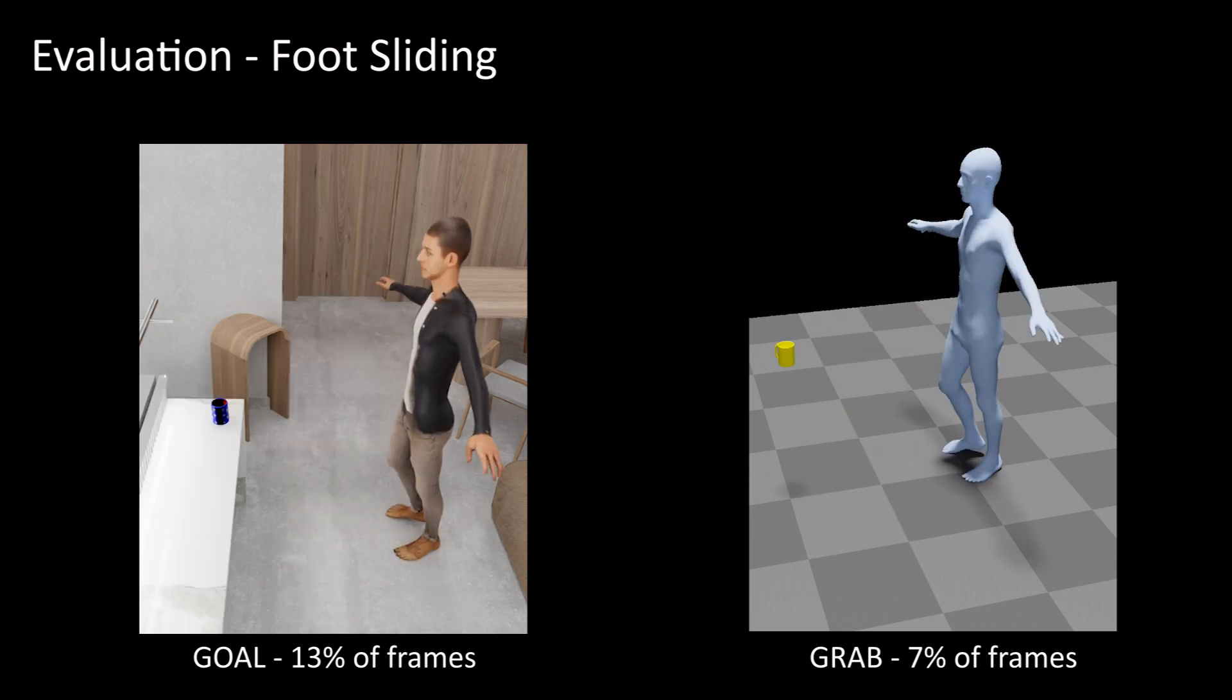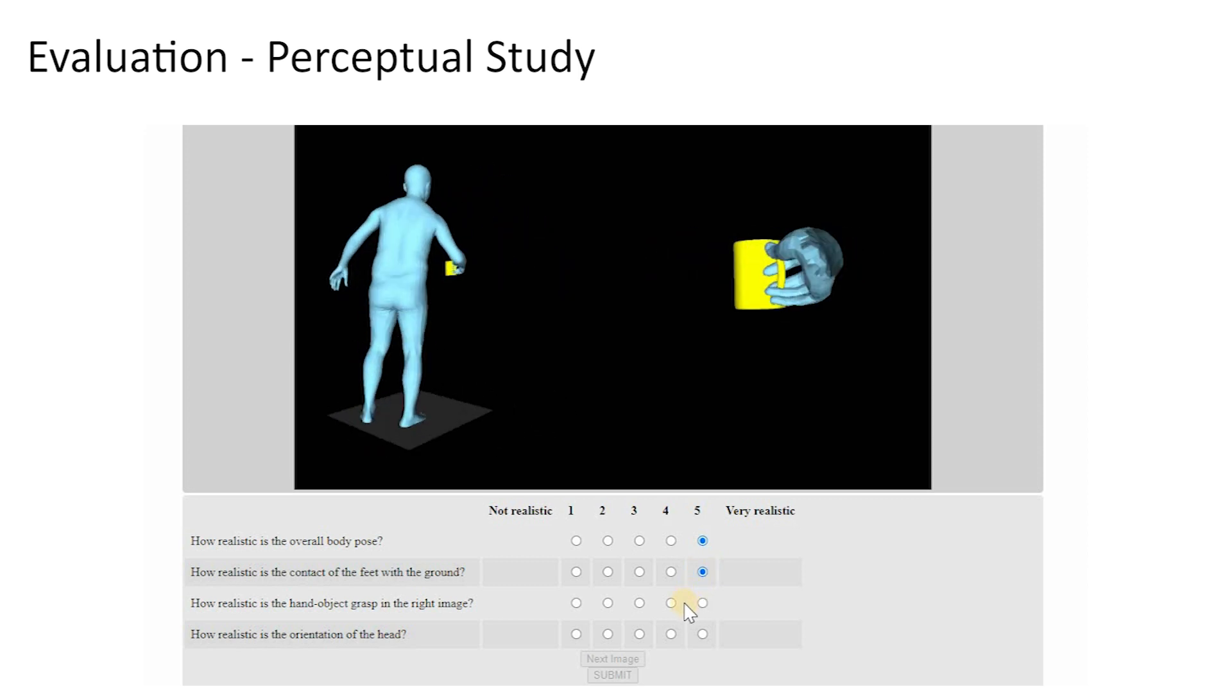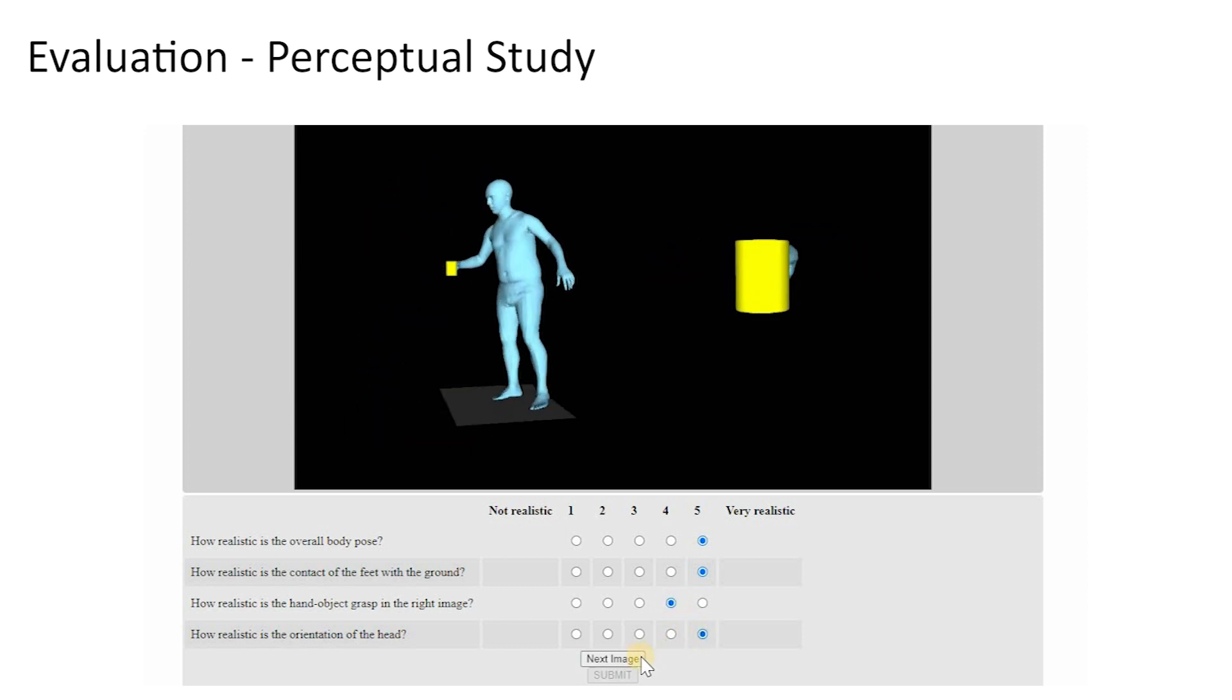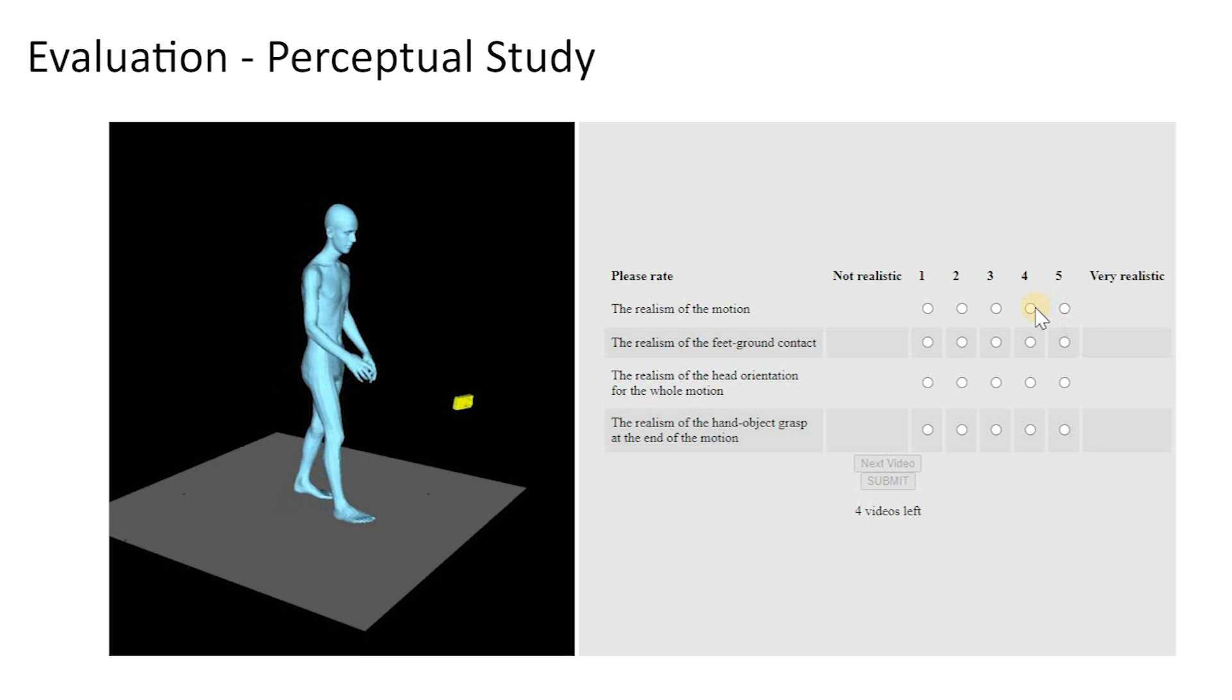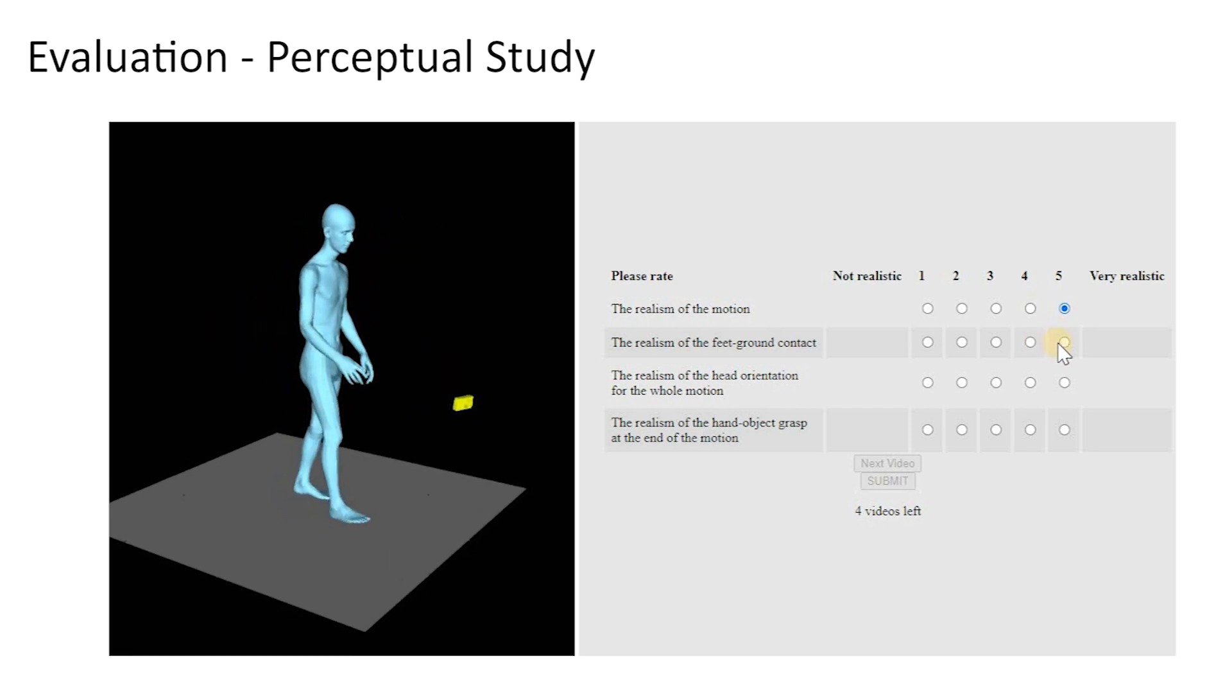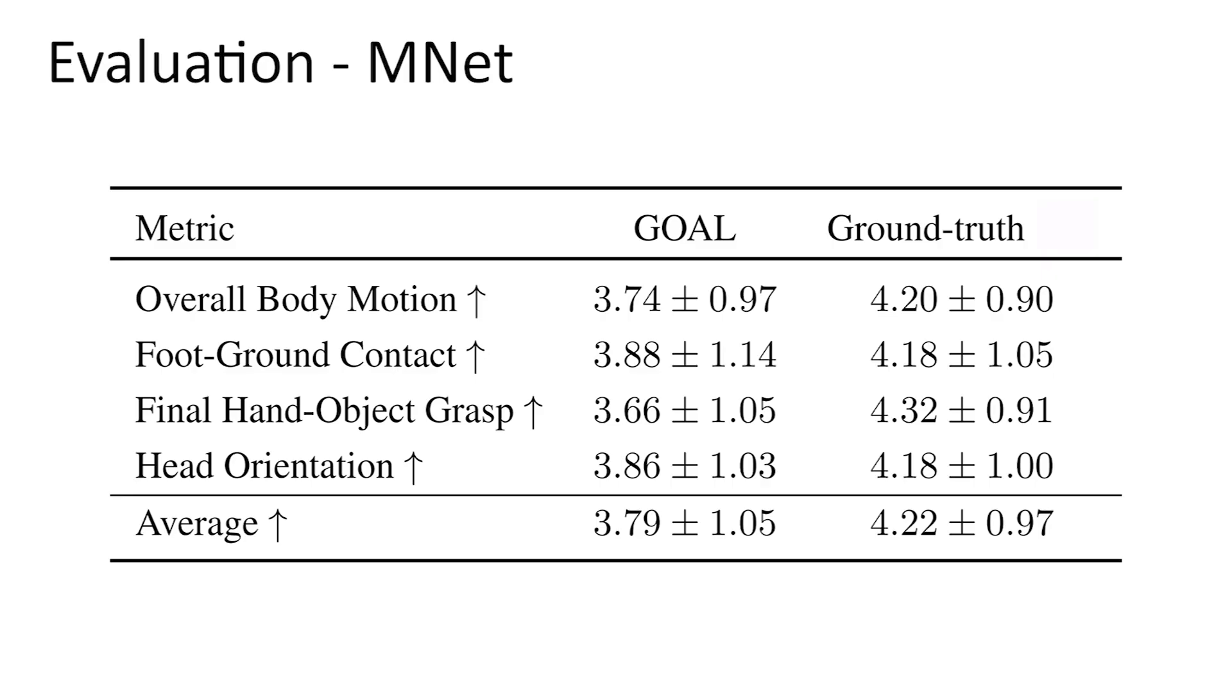We also evaluate GOAL with a perceptual study. We show participants the generated motions and goal grasps, and ask them to rate their quality. For this, the raters take into account the quality of the grasping pose, foot-ground contact, hand-object grasp, and head direction. Answers are given on a scale from 1 to 5, where 1 means not realistic, and 5 means very realistic. The ratings suggest that the generated motions from MNet are realistic.